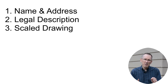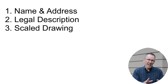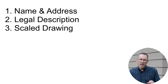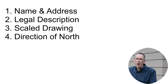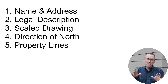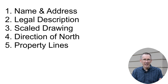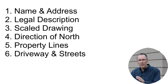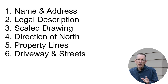Number three, the drawing must be to scale. For example, one quarter inch on the site plan equals one foot in real life. Number four, the direction of north to show how your property is oriented. Number five, your property lines must be on the site plan. Number six, the location of your driveway and adjacent streets.